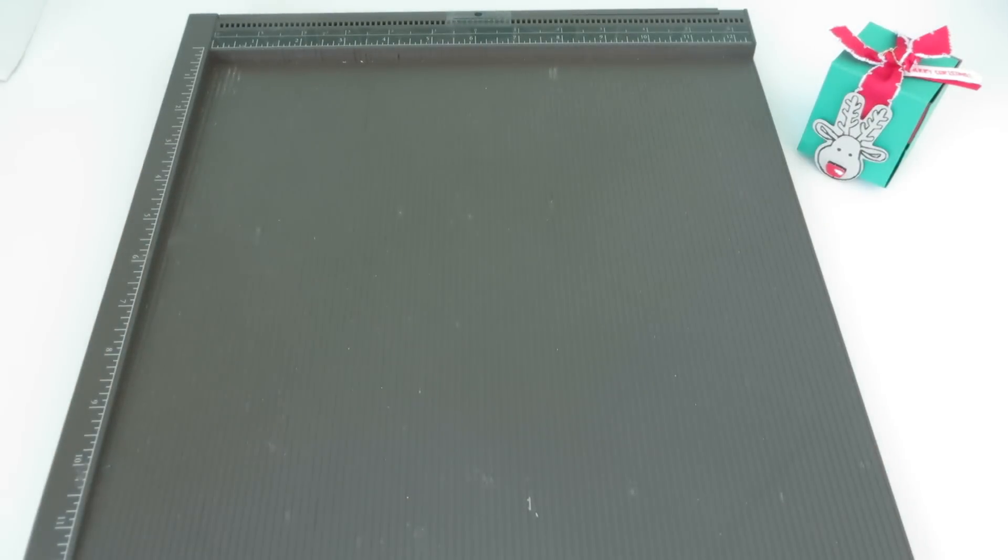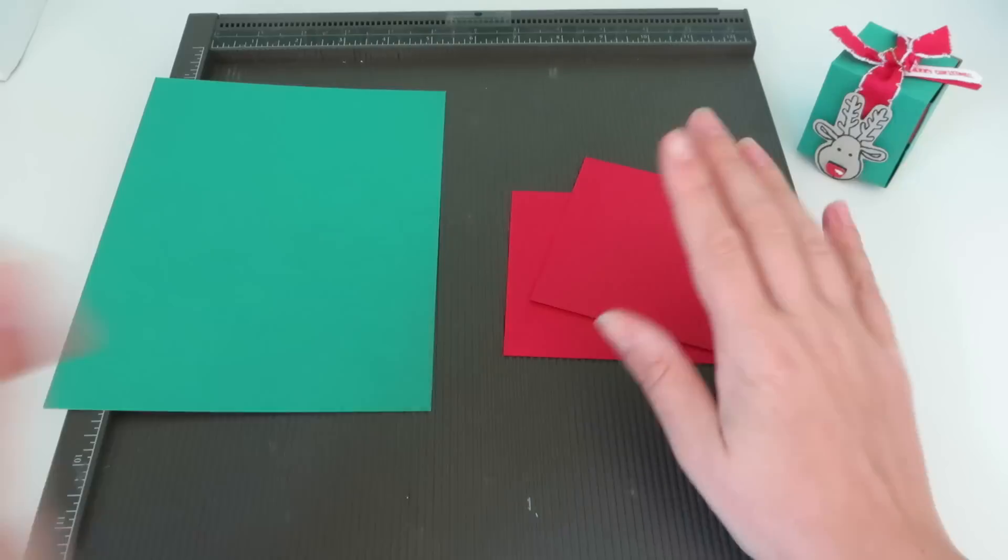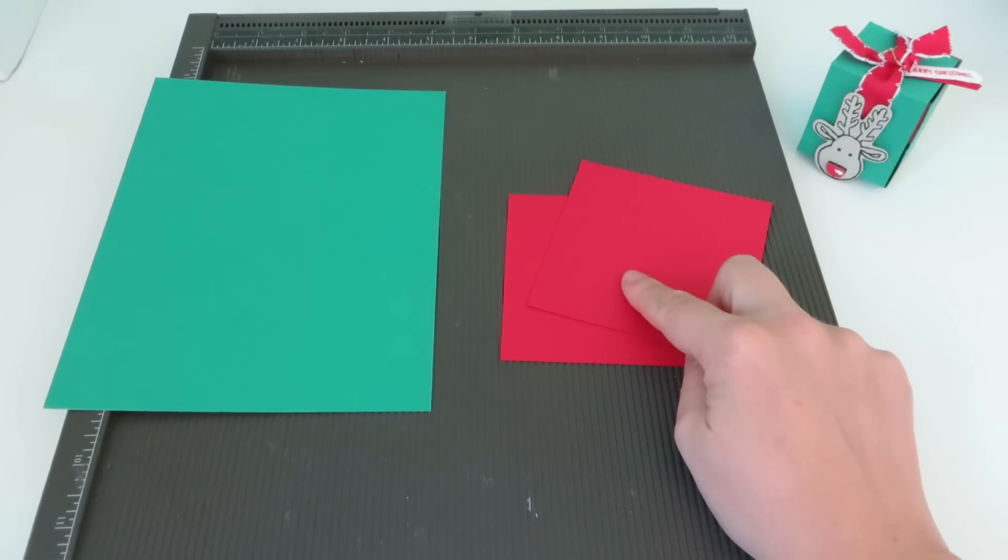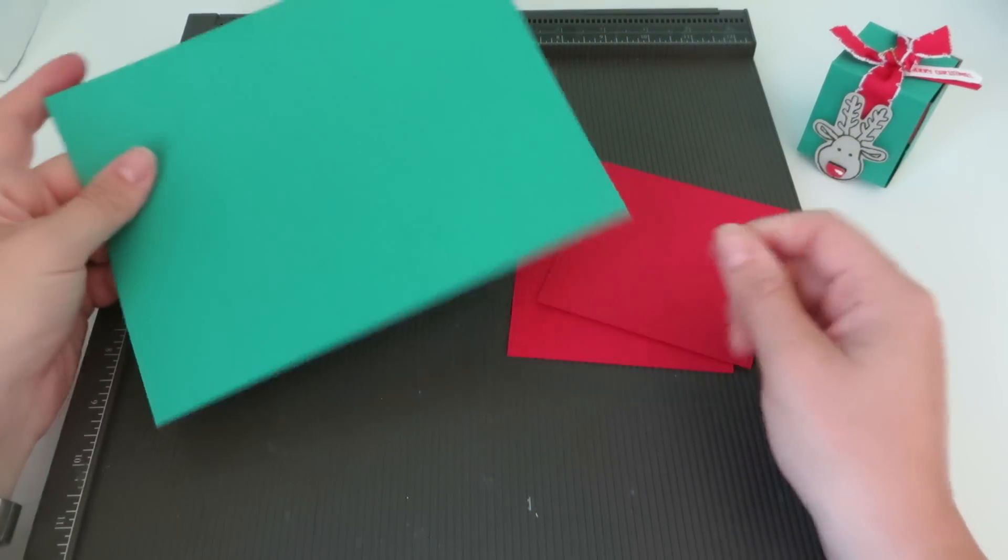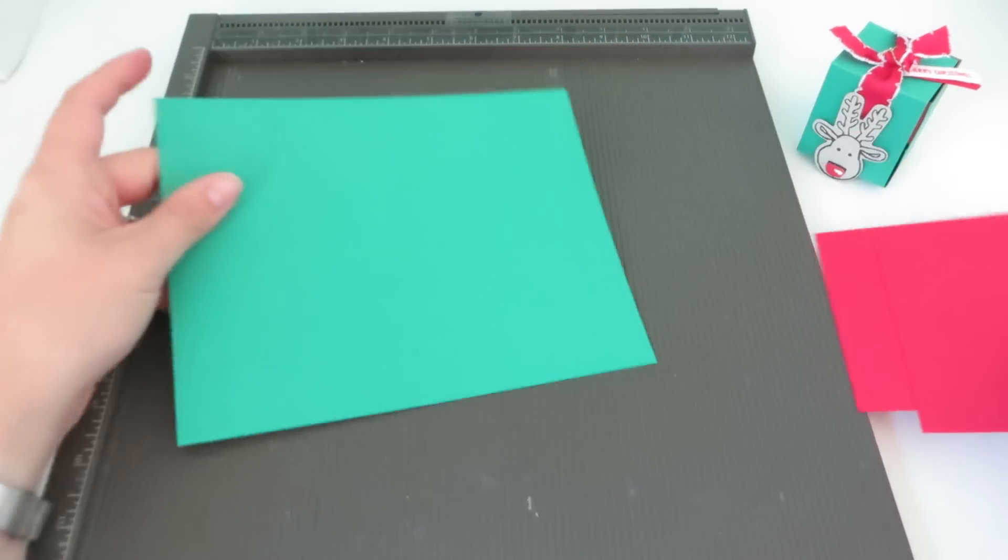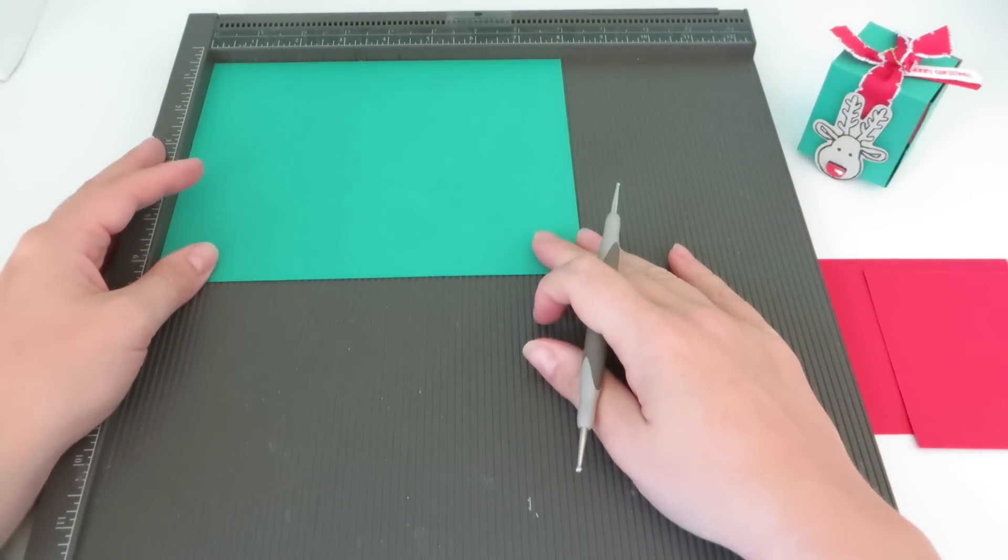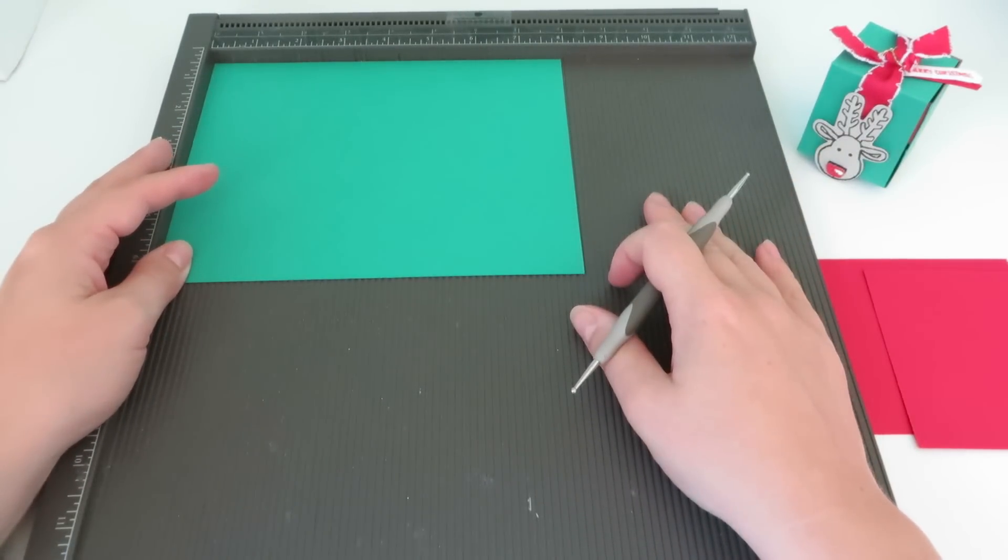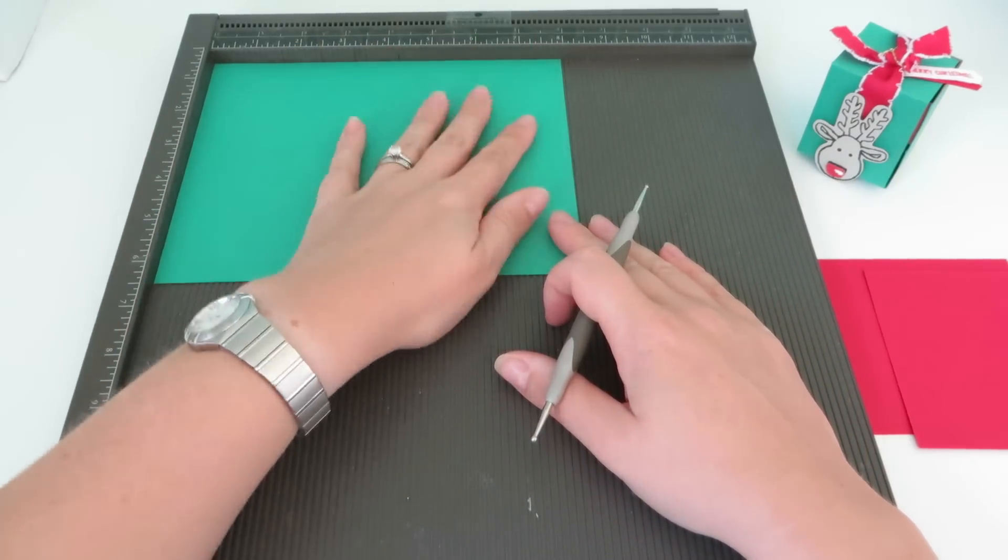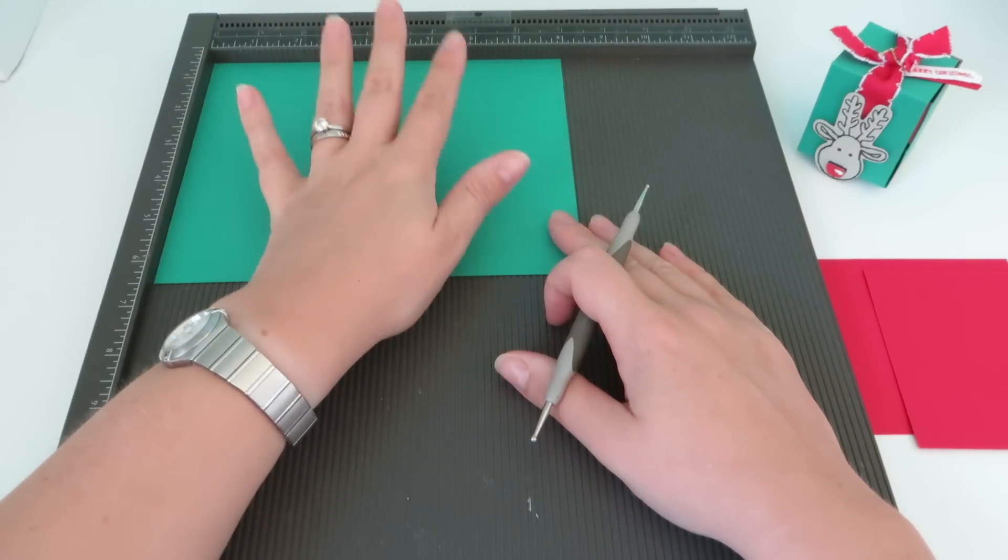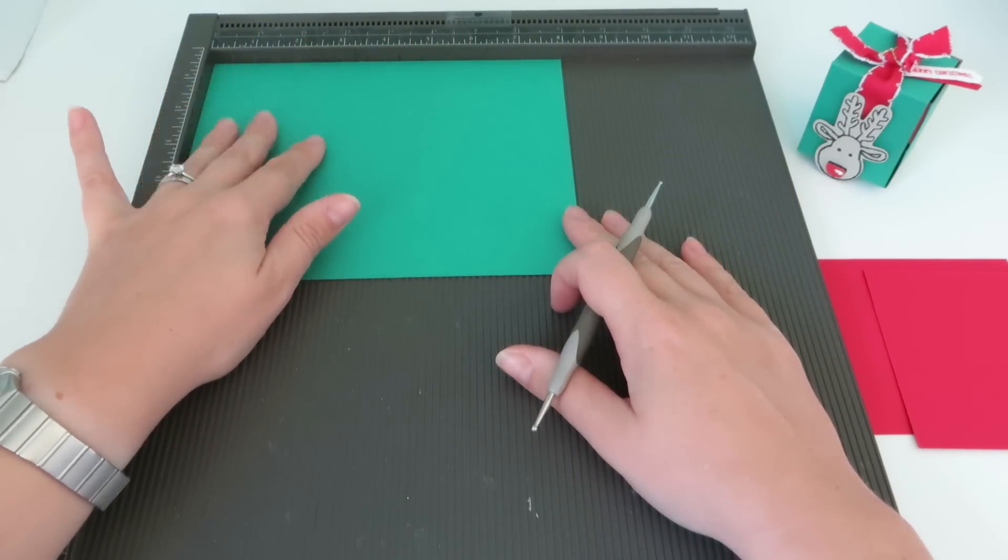So you are going to need to begin with some Real Red cardstock and some Emerald Envy cardstock. Real Red measures 3 7/8 of an inch square. Emerald Envy is 8 by 6 1/4. All of the dimensions, as always, are over on my blog at CraftyCarolineCreates.com. So do pop over there if you don't get a chance to write any of them down.